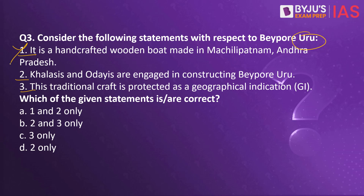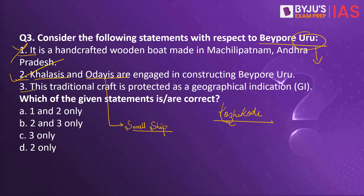The prominent people associated with Uru making are Odais and Khalasis. The Odais family name comes from 'Odam', a type of small ship. Khalasis, or the Mapila Khalasis, are world-famous for their skill in launching completed Urus into water using only traditional methods — so statement 2 is correct. Regarding statement 3, Kori Code has recently applied for a geographical indication tag for the Beypore Uru, but it has not been granted yet — so statement 3 is incorrect. Therefore the right answer is option D, 2 only.